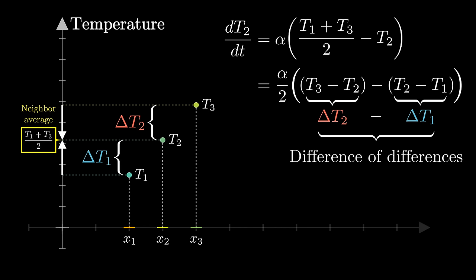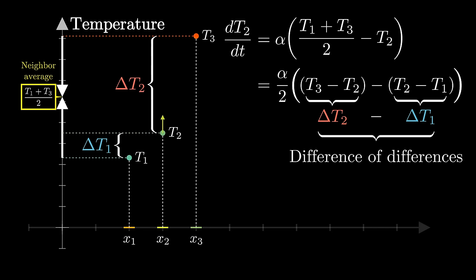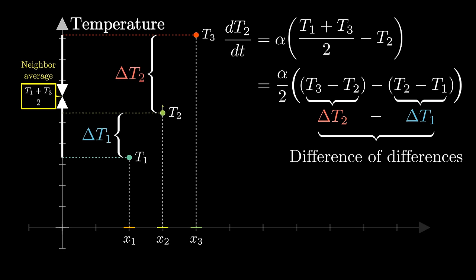Here, take a moment to gut check that this makes sense. If those two differences are the same, then the average of t1 and t3 is the same as t2, so t2 will not tend to change. If delta t2 is bigger than delta t1, meaning the difference of the differences is positive, notice how the average of t1 and t3 is bigger than t2, so t2 tends to increase.